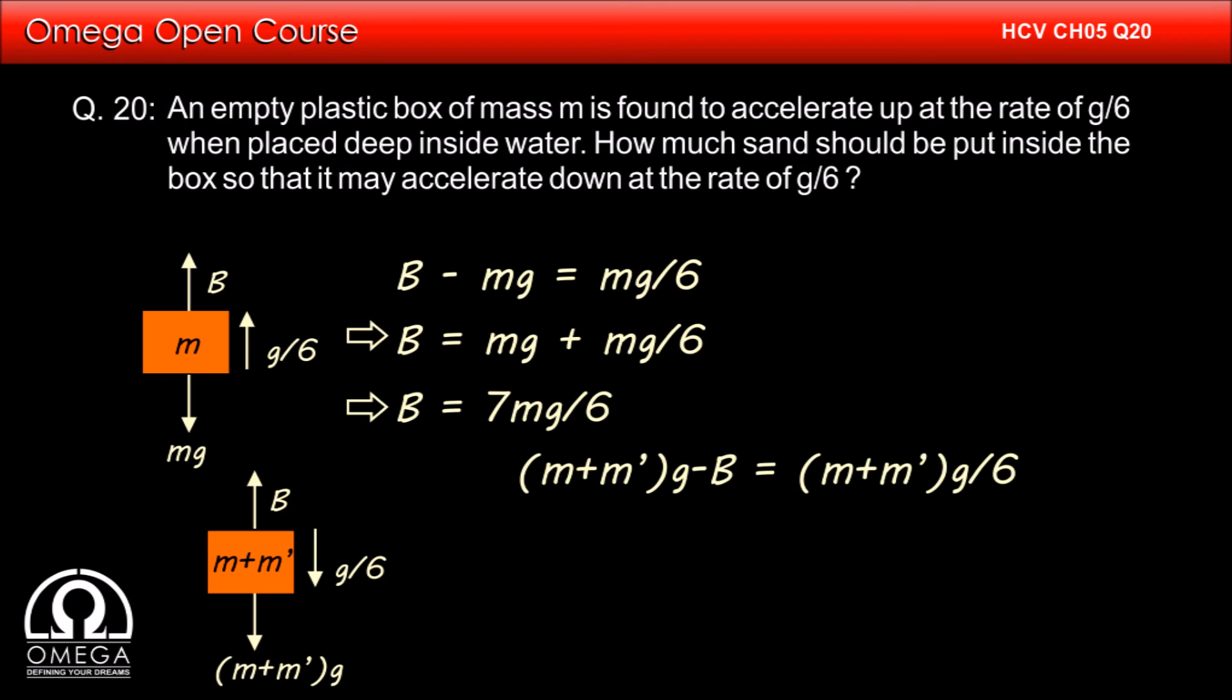Therefore, m plus m' g minus b must be equal to m plus m' into g by 6. Putting the value of b, this becomes mg plus m' g minus 7mg by 6 is equal to m plus m' g by 6.